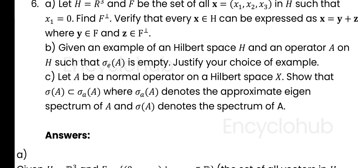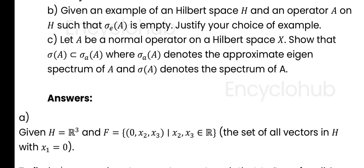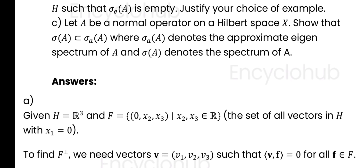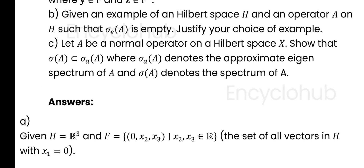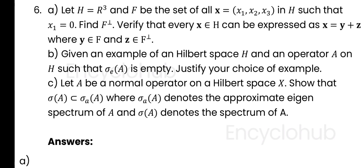Part (c): Let A be a normal operator on the Hilbert space. Show that σ_α(A) equals σ(A), where σ_α(A) denotes the approximate eigen spectrum for A and σ(A) denotes the spectrum of A. If you need answers to these questions, contact us on WhatsApp: 9009368238. Thank you so much for watching.